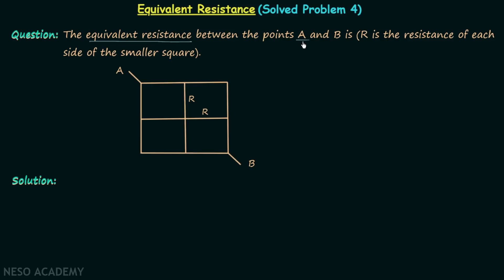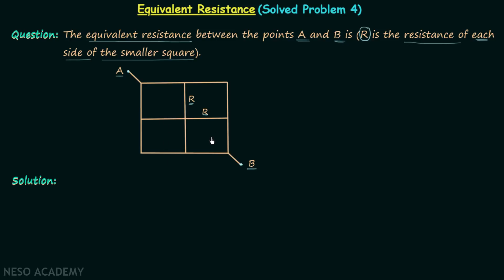We need to find the equivalent resistance between points A and B. When you try to calculate it by finding series and parallel combinations, it won't be possible in this arrangement. Also, equipotential points are not directly visible here. In this problem, the resistance of each side of the smaller square is equal to uppercase R.